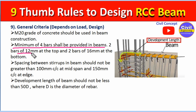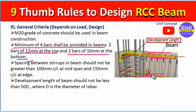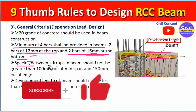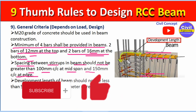Second, a minimum of four bars shall be provided in the beam: two bars of 12 mm diameter at the top and two bars of 16 mm diameter at the bottom. Third, the spacing between stirrups should not be greater than 100 mm at mid-span and 150 mm at the edges.